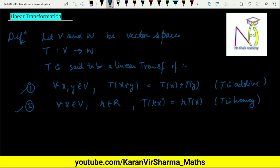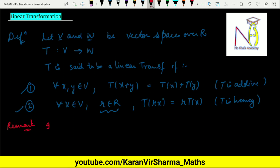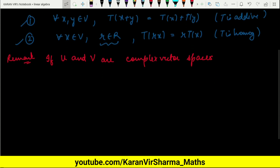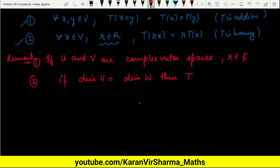Here we have considered V and W as vector spaces over the reals, because we chose R from the reals. Now a remark: if V and W are complex vector spaces, the definition remains the same except in property (b), where R is chosen from the complex numbers instead of the reals. A second remark: if the dimension of V equals the dimension of W, such a transformation is called a linear operator.